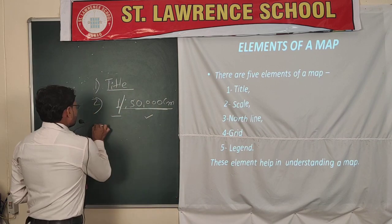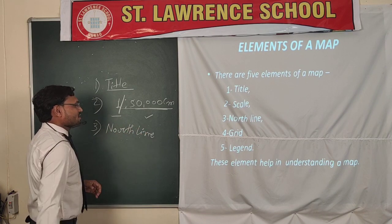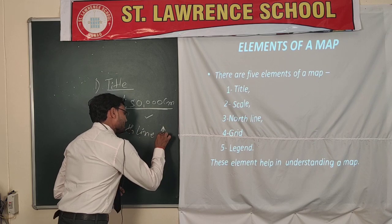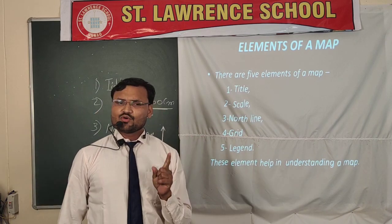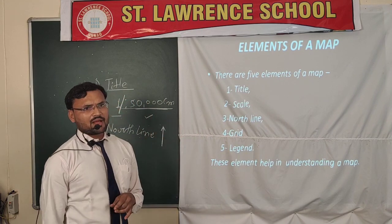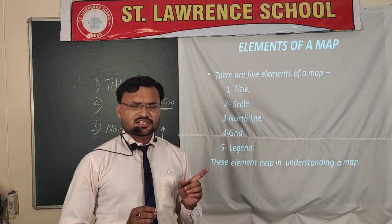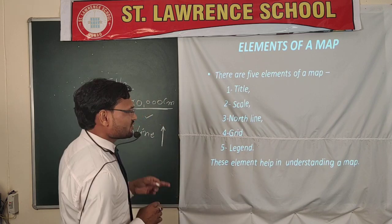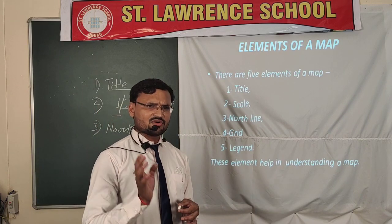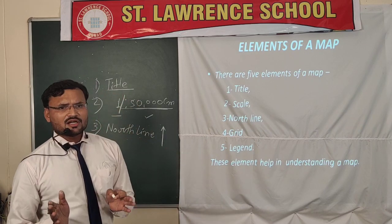Third is the north line. Every map has a north line — an arrow is drawn indicating the north direction, always pointing toward the top of the map. With the help of one direction, we can find all four directions on that map. Using a compass, we find the actual directions and orient our map with the help of this north line.